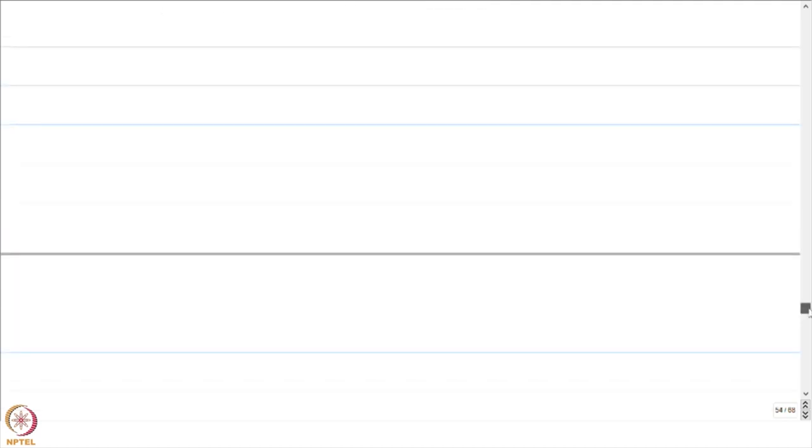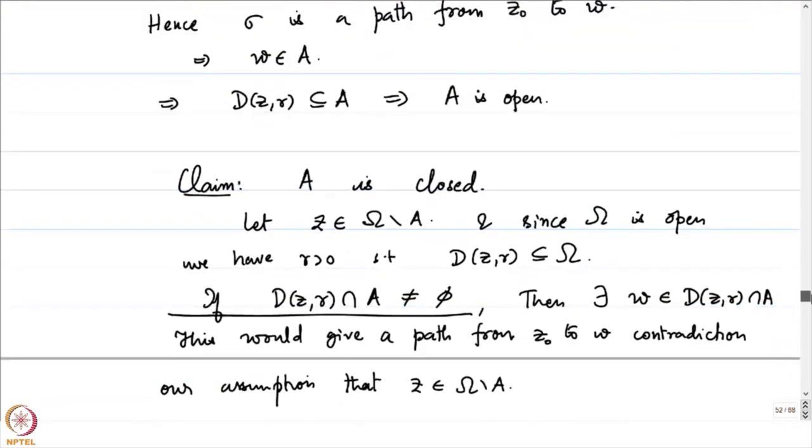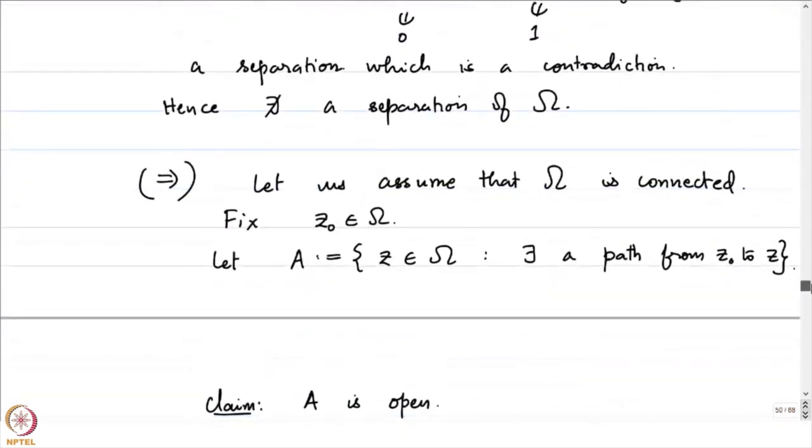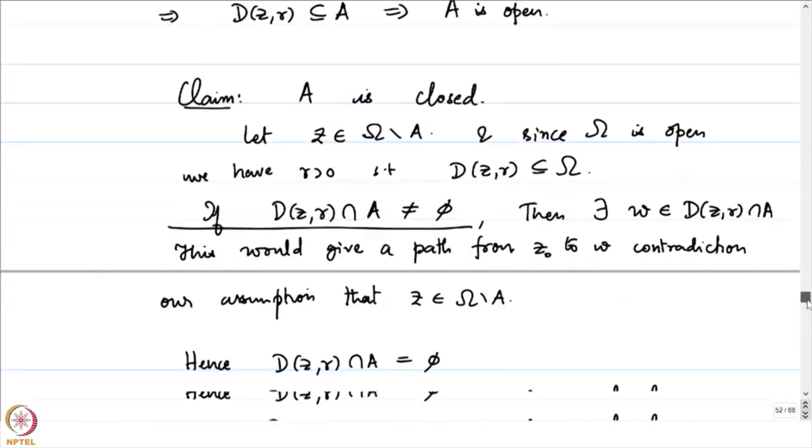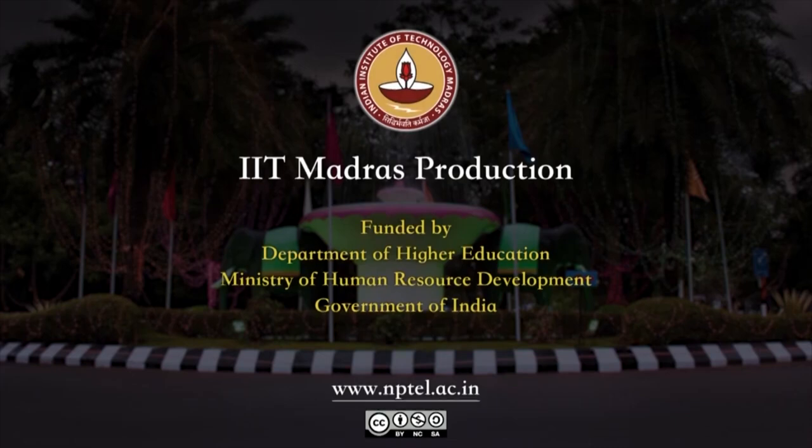Thus any pair of points in omega can be connected by a path. Therefore we have a characterization of connected open sets: an open subset omega of C is connected if and only if any two points in omega can be connected by a path. We have used the fact that omega is open in the forward direction of the proof. Let me not go more into the notion of connectedness — we will develop any needed notions as and when they come. Thank you.